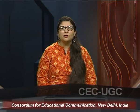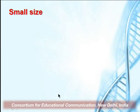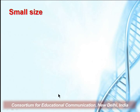Now we will talk about PBR 322. This is the map of PBR 322. Its main utility comes from the fact that it is very small in size and it carries two sets of antibiotic resistance genes for vector selection and recombinant selection.